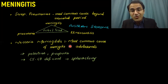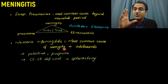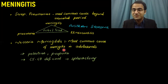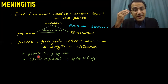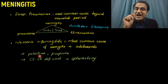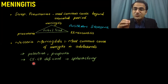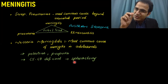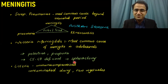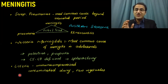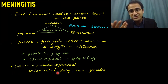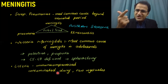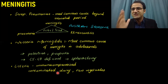Neisseria meningitidis is a common cause of meningitis in adolescents — teens living together in hostels or military camps. It causes petechiae and purpura. As an encapsulated bacterium, it is particularly dangerous in patients with complement deficiencies or post-splenectomy, since encapsulated bacteria are cleared by complement and spleen. Listeria affects immunocompromised patients and is transmitted via contaminated dairy products and raw vegetables.